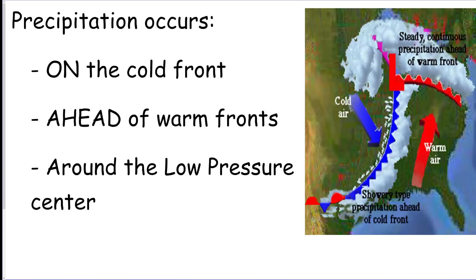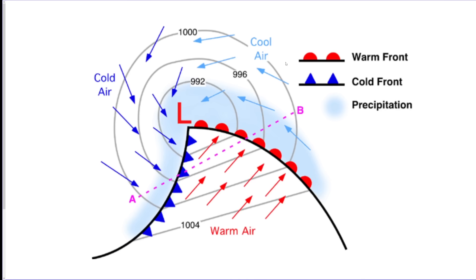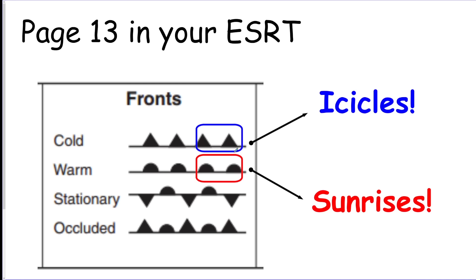For a low pressure cyclone, precipitation is on the cold front and ahead of the warm front, and around the low. Cold fronts bring heavy rain, blizzards, and violent storms; warm fronts bring widespread steady rain. The mid-latitude cyclone shape and its fronts are on the reference table.